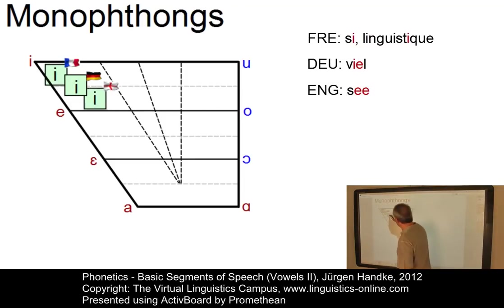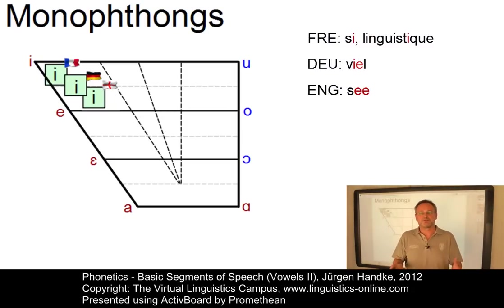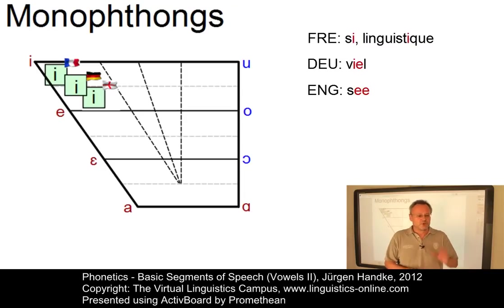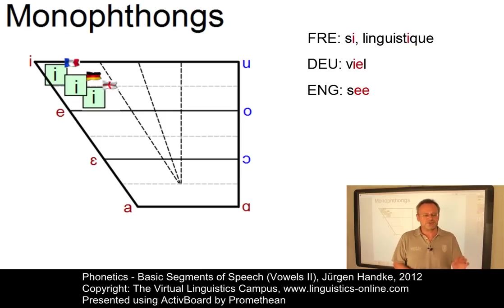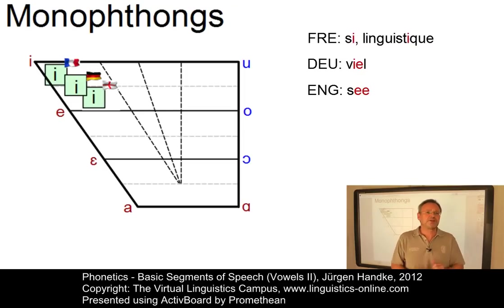The E in English, for example in RP, is slightly centralized and halfway between cardinal 1 and 2. To make such judgments requires intensive phonetic training, and even then phoneticians often have different opinions about the exact placement of a vowel on the vowel chart. Since a precise placement in terms of a tiny dot is impossible anyway, we suggest using relatively large squares for the representation of vowels produced with unrounded lips and relatively large circles for vowels produced with rounded lips.